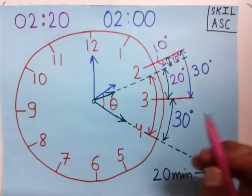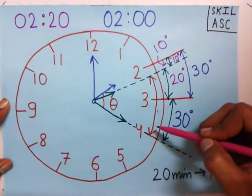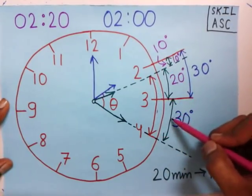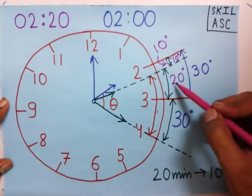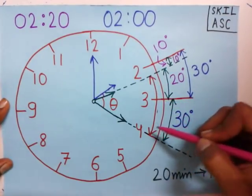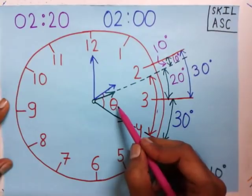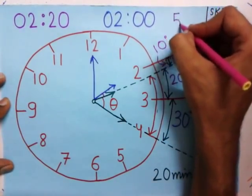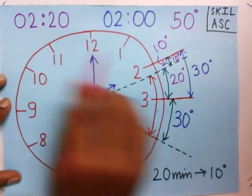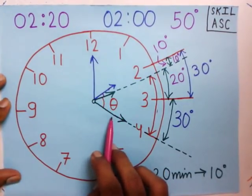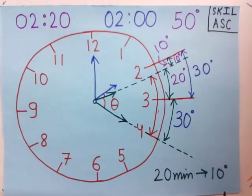Our aim is to find the total angle theta. As stated before, theta is made up of two angles. We add them: 20 plus 30 equals 50. So the complete angle theta is 50 degrees. At time 2:20, the angle between the hour and minute hand is 50 degrees. Thanks for watching.